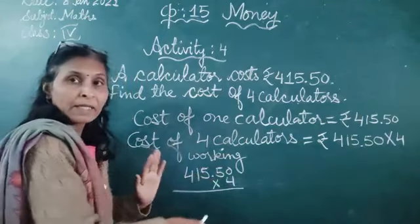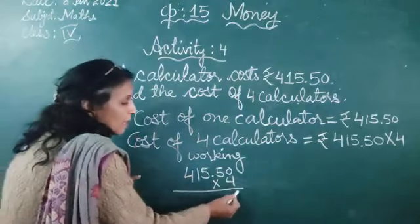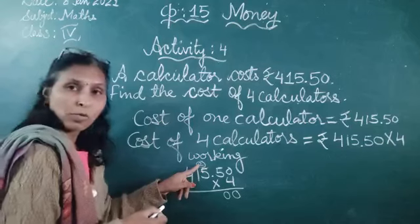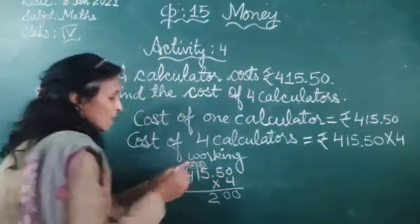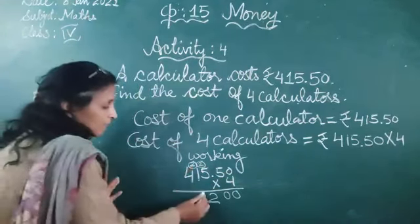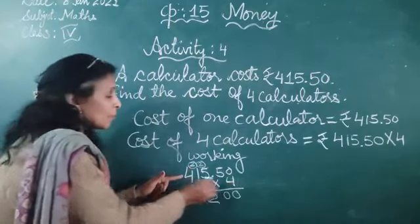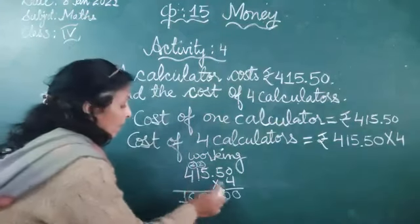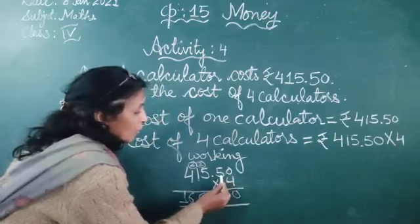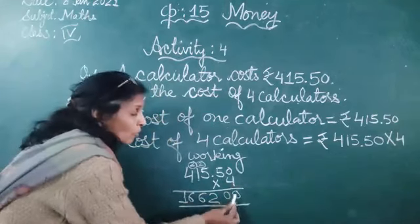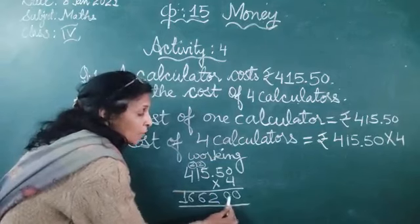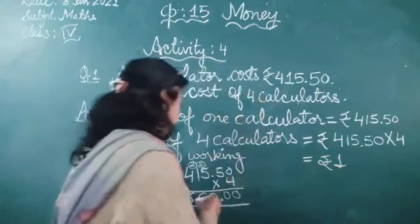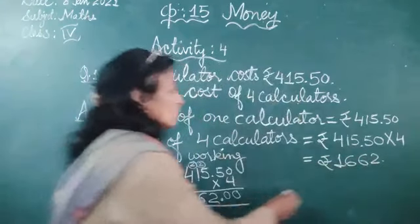Now we are going to multiply by 4. Four multiplied by 4 is 16. We write 6 and carry 1. Continuing the multiplication, we get one thousand six hundred sixty two point zero zero.